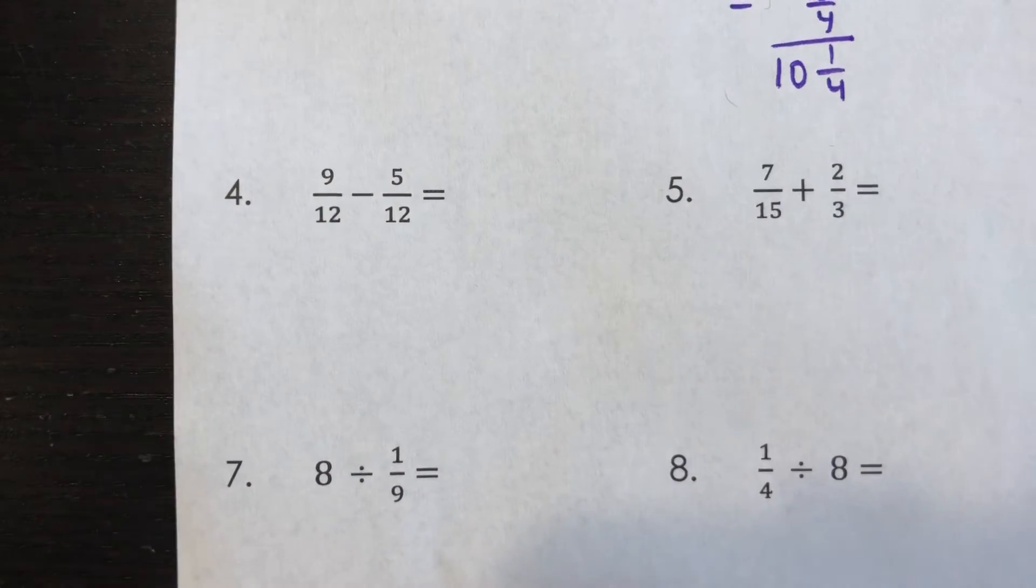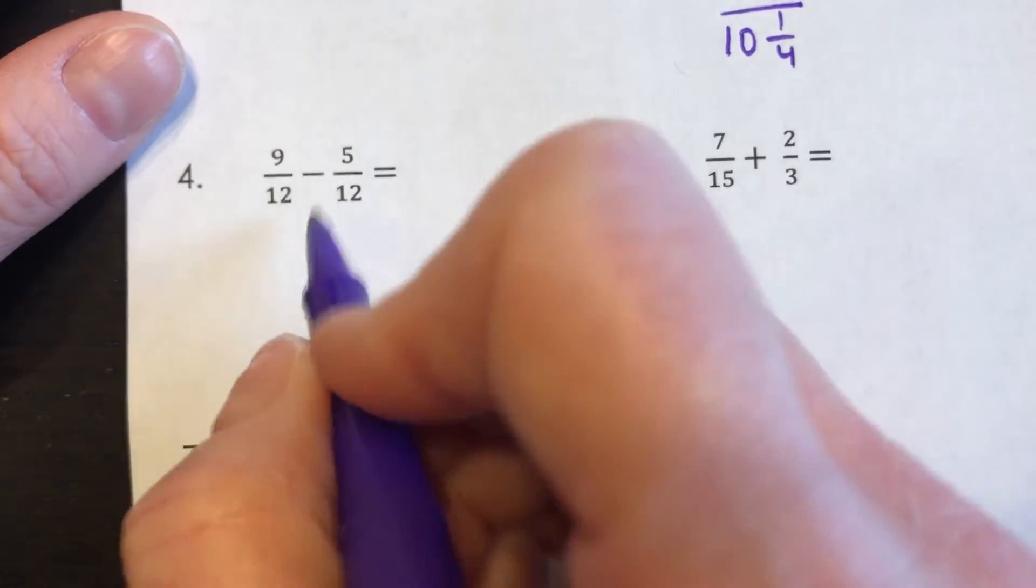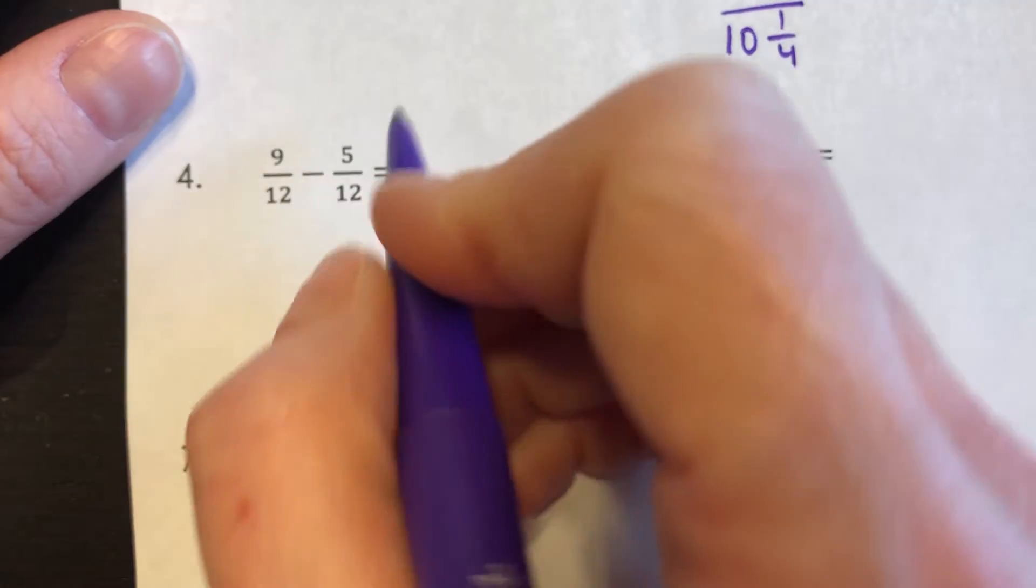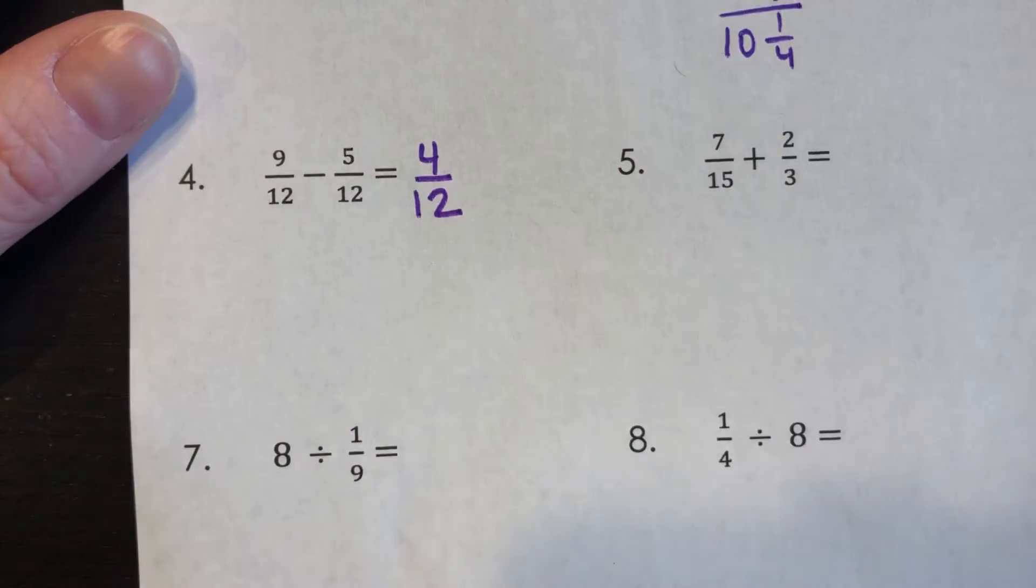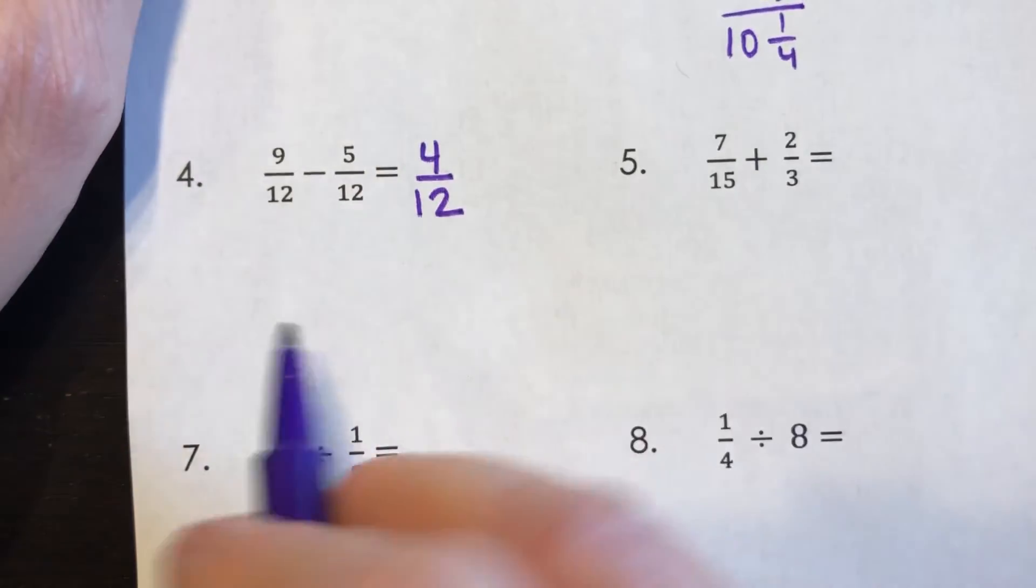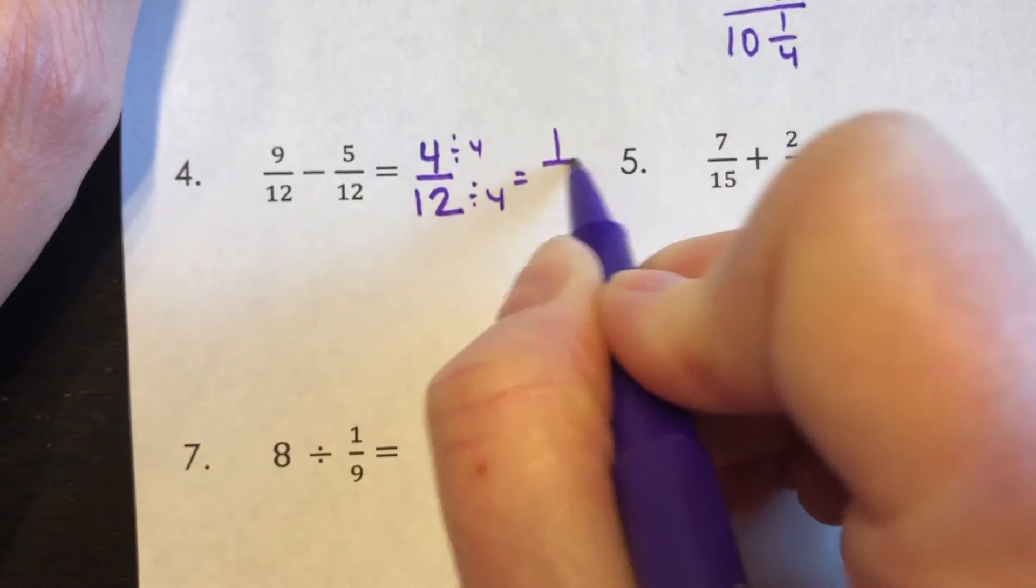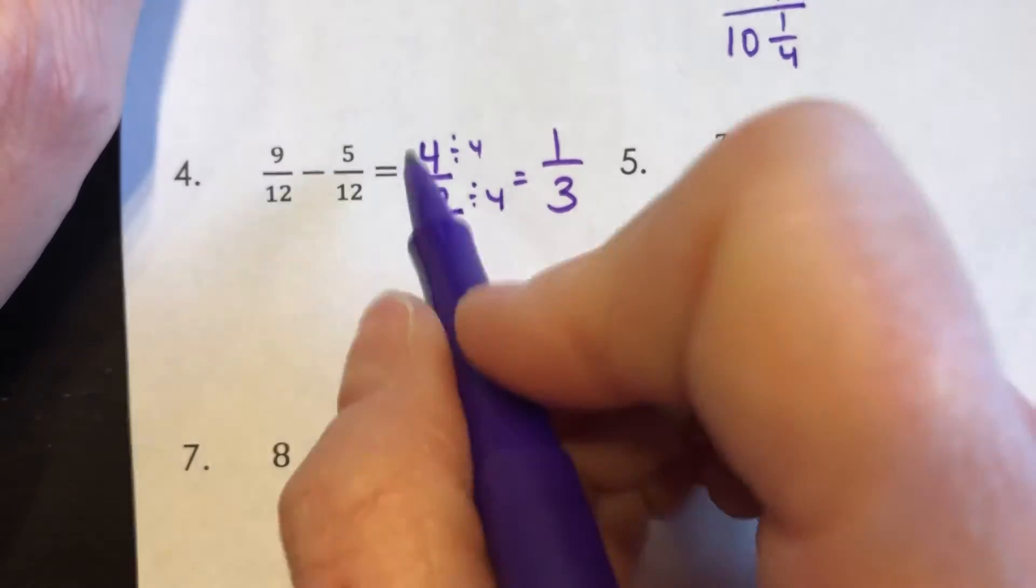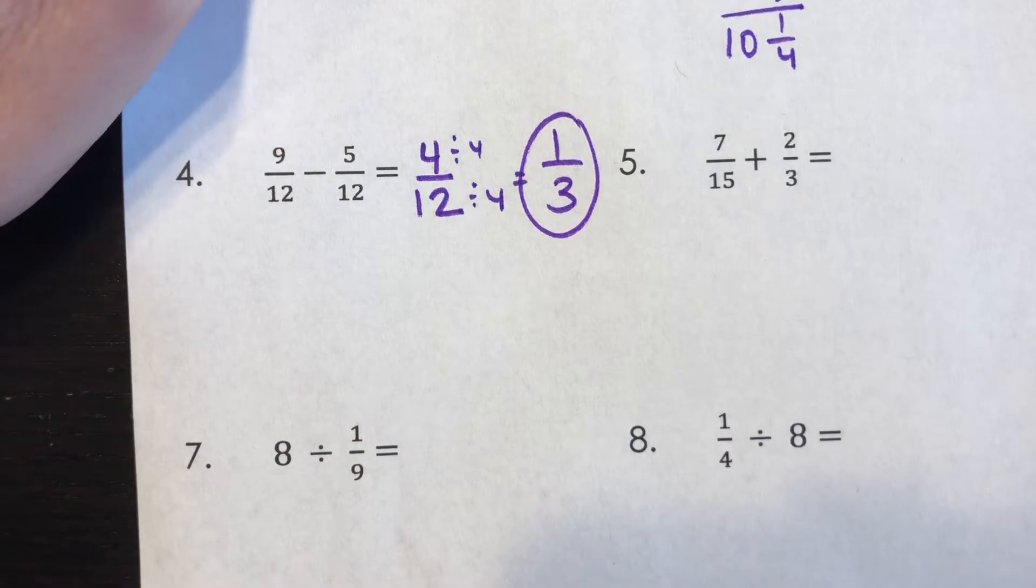For number four, I have nine twelfths minus five twelfths. With subtraction, I do need a common denominator and thankfully we already have one. So I can just do nine minus five, which is four. And my denominator is twelve. Four twelfths should not be your final answer though, because four goes into both of those. So after you divide them both by four, your final answer should be one third. If you had four twelfths, you have an equivalent answer, but it's just not the simplified answer. So make sure you simplify it.